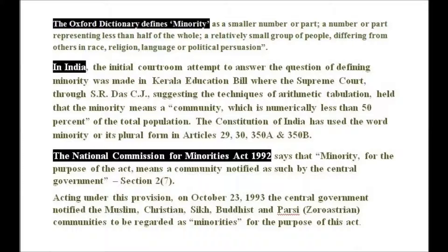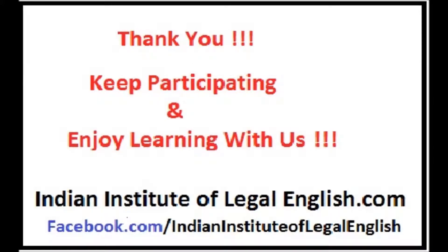Acting under this provision, on October 23, 1993, the central government notified the Muslim, Christian, Sikh, Buddhist, Parsis, and Zoroastrian communities to be regarded as minorities for the purpose of this act.